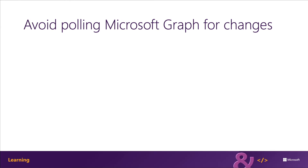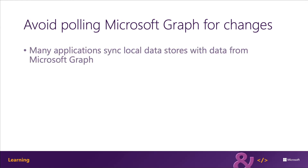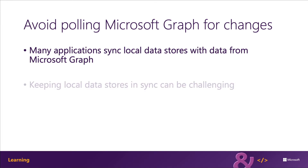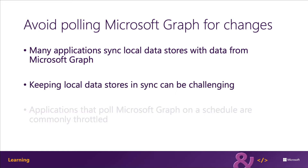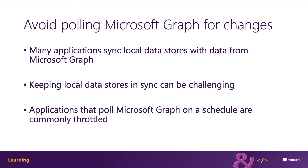One common scenario that custom applications implement is polling Microsoft Graph on scheduled intervals. Typically, this strategy is used to keep an application's local data store in sync with data exposed in Microsoft Graph. However, polling Microsoft Graph for changes usually requires multiple GET requests for data to submit in succession, a scenario that commonly triggers requests to be throttled.